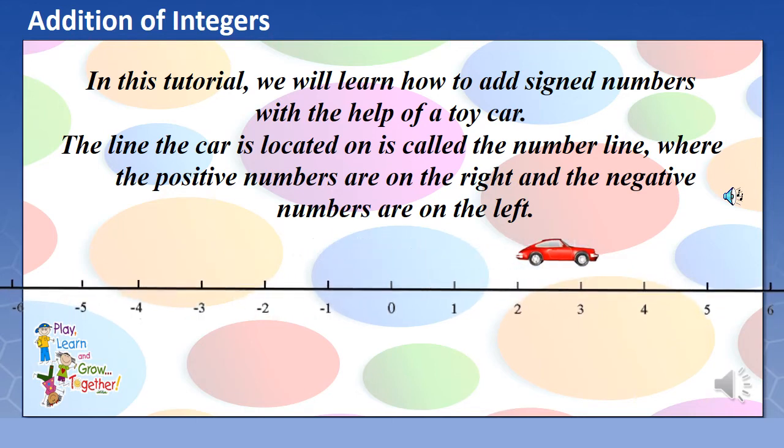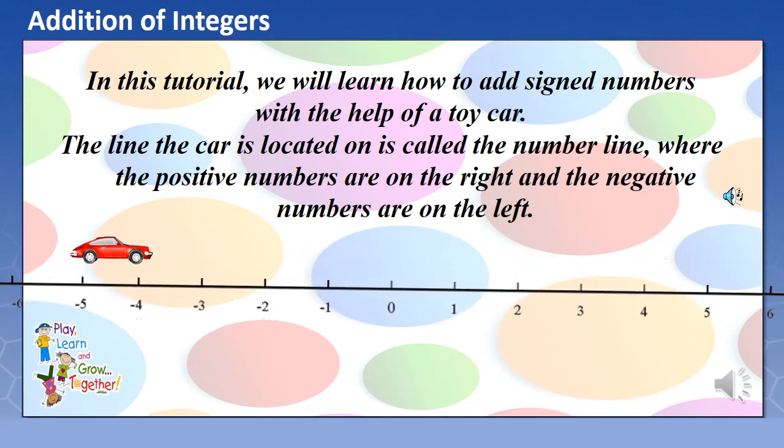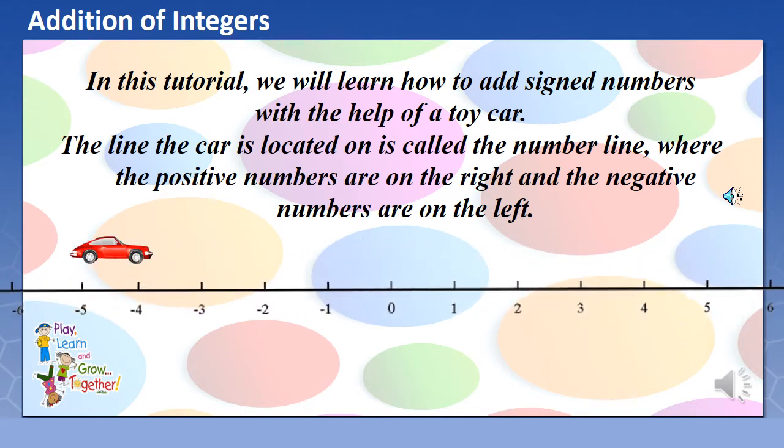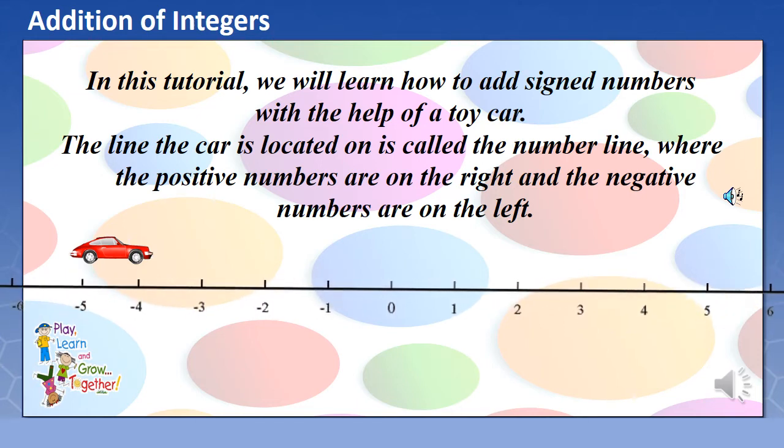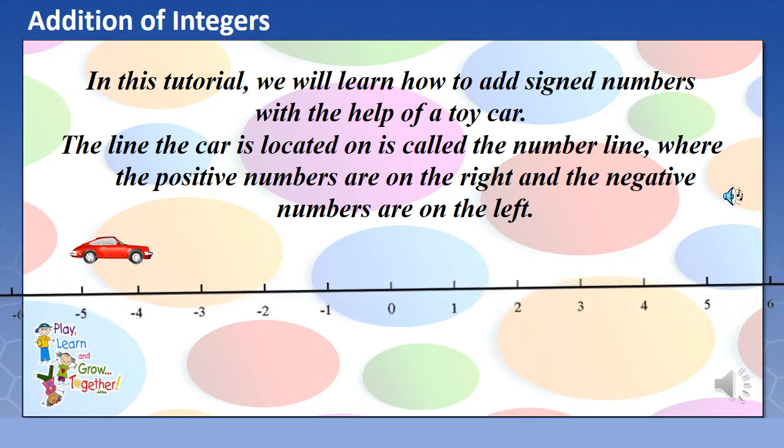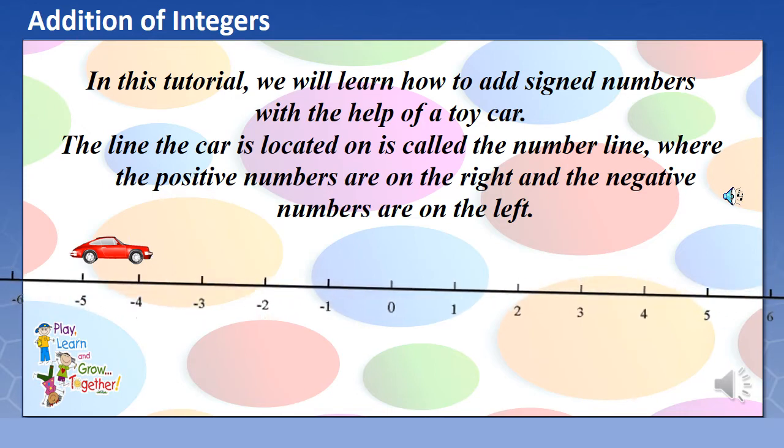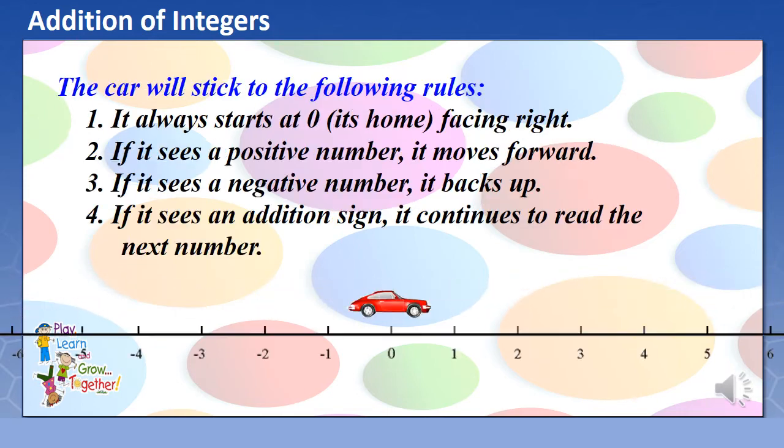In this tutorial, we will learn how to add integers with the help of a toy car. The line the car is located on is called the number line, where the positive numbers are on the right and the negative numbers are on the left. The car will stick to the following rules. Number 1: It always starts at 0, its home, facing right.